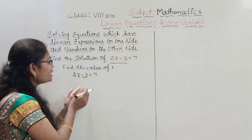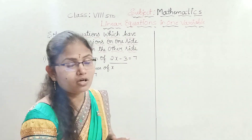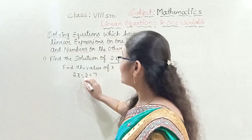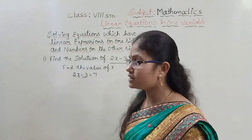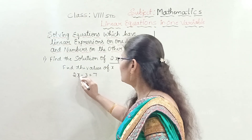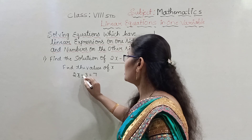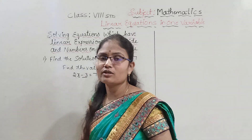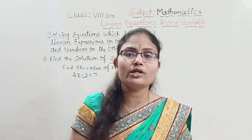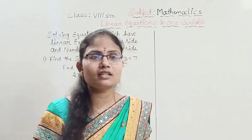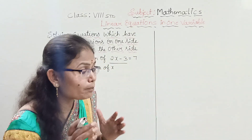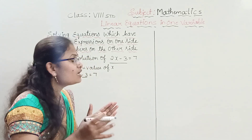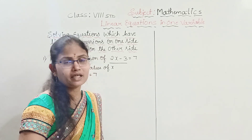We eliminate by taking the opposite operation of each term. In 2x minus 3, we have to eliminate minus 3 first. How do we eliminate minus 3? By taking the opposite operation — the opposite of subtraction is addition.